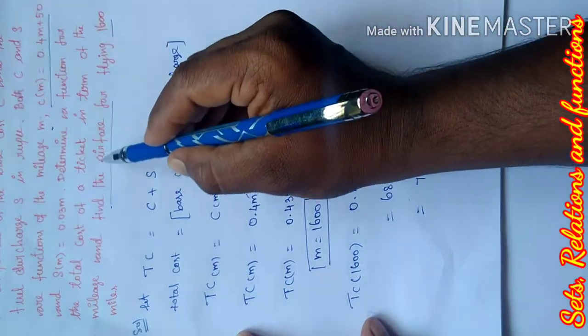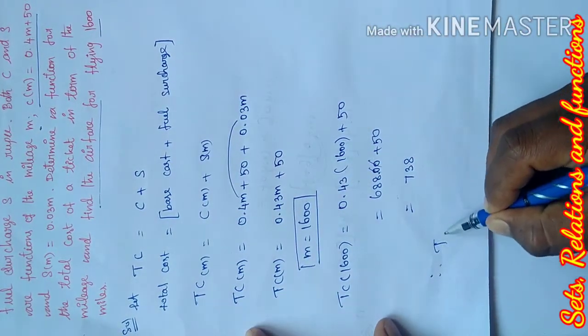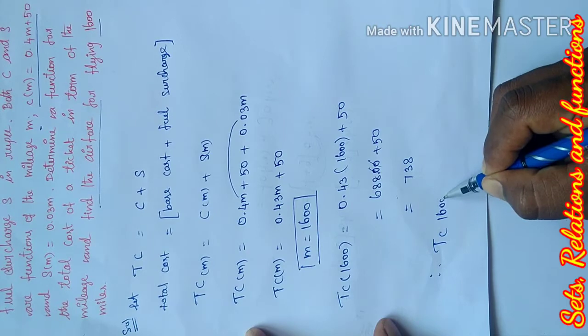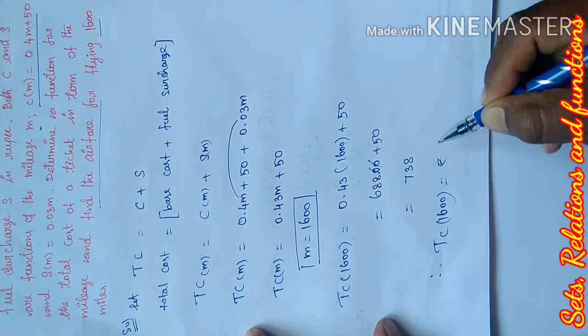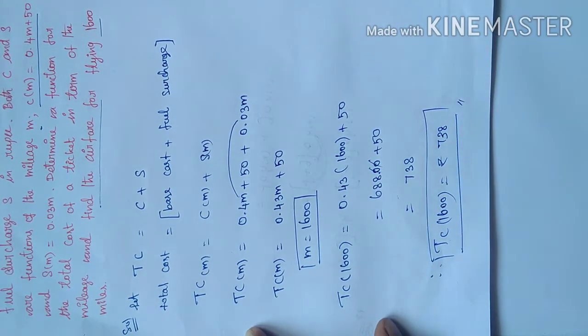So the total cost of mileage of 1600 is 738 rupees. Hence proved.